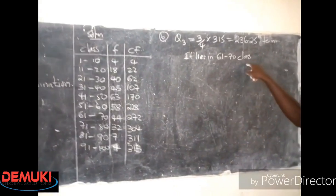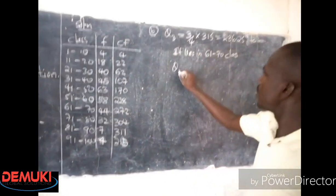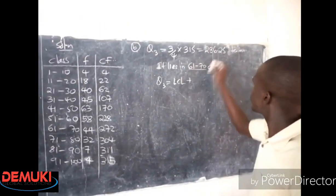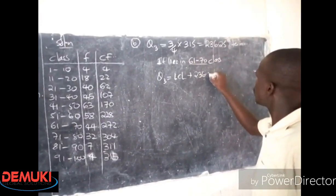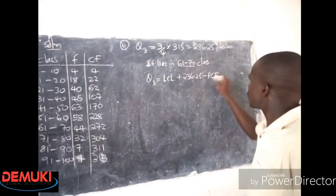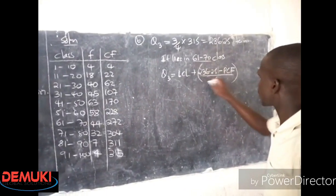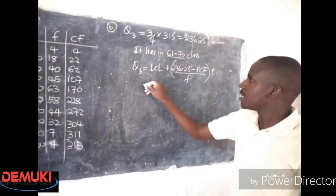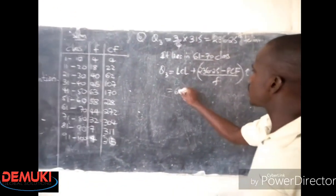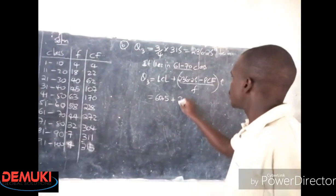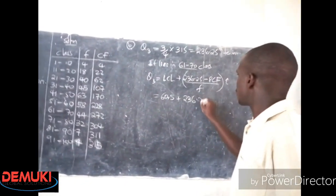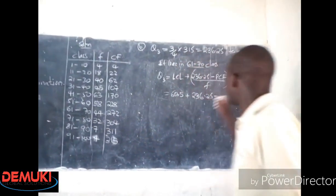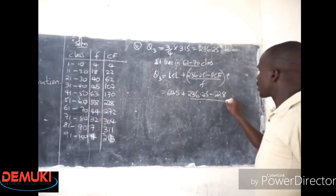So that means Q3 shall be equal to the lower class limit of this class where it lies, plus 236.25 minus the previous cumulative frequency of that class, which is 228.